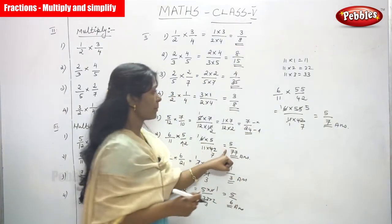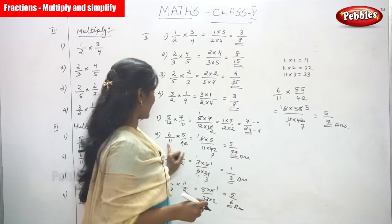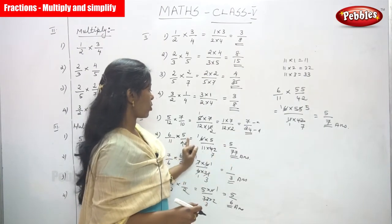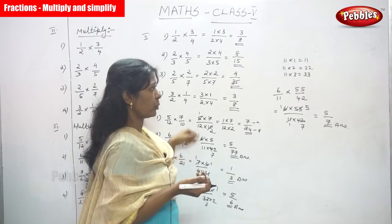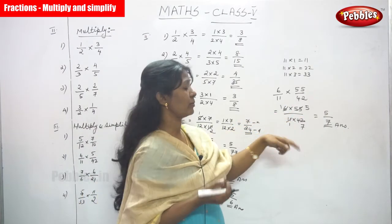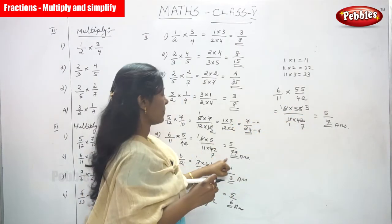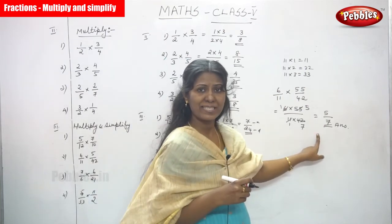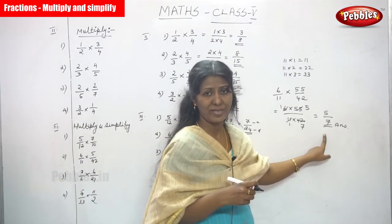Compare: in the second sum where we had 5/42 the answer was 5/77, but here with 55/42 the answer is 5/7. The only difference was changing 5 to 55 in the numerator. So 5/7 is the correct answer for this question.